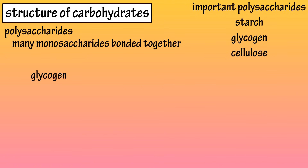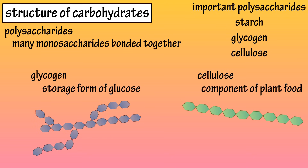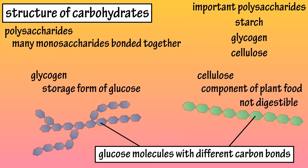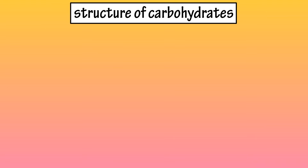Glycogen is not a dietary carbohydrate, as it is a storage form of glucose found in the muscles and liver, and cellulose is a component of plant food referred to as fiber. The human body cannot break the bonds of these molecules, so they are not digestible, but cellulose has many benefits to overall health, which we will cover in another video. And that covers the basics on the structure of carbohydrates.